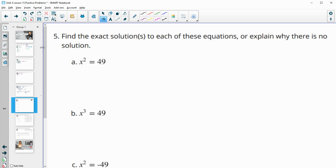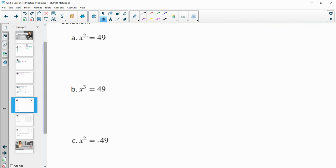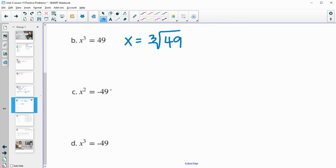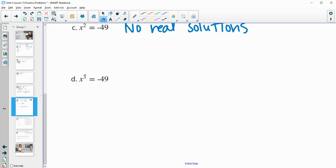Number 5, find the exact solution to each equation or explain why there's no solution. So x squared equals 49. So x is going to equal the plus or minus square root of 49. Part b, to undo a cube, we do a cube root. So this x is just going to equal the cube root of 49. Part c, we know we can never square anything to get a negative number. So there's going to be no real solutions to this. And then part d, we certainly can cube a number to get a negative. So this answer is just going to be the cube root of negative 49.